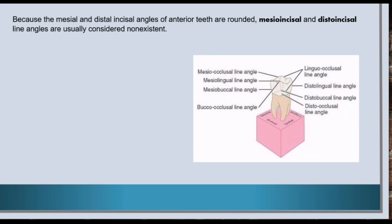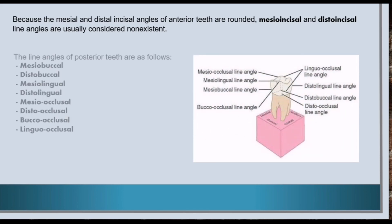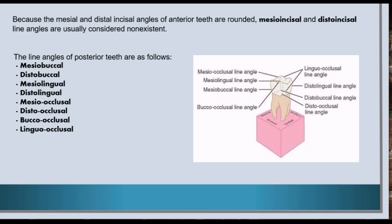The line angles of posterior teeth are as follows: mesiobuccal, distobuccal, mesiolingual, distolingual, mesio-occlusal, disto-occlusal, bucco-occlusal, and linguo-occlusal.